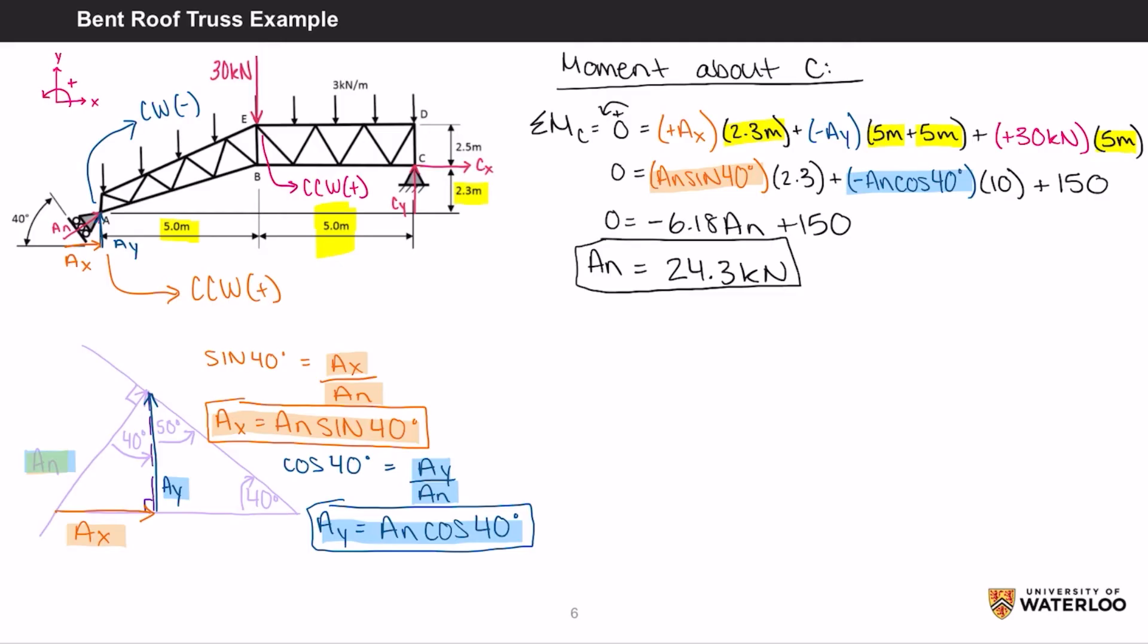This is the actual force of AN and not the components. Now that we have AN as well as the components for AN, we can use the remaining equilibrium equations to solve for CX and CY respectively. The net force in the X direction equals 0 in equilibrium, which equals AX plus CX. Substituting in AX for AN sine 40 as well as remembering that AN is equal to 24.3 kilonewtons, you then get CX equals negative 15.6 kilonewtons.